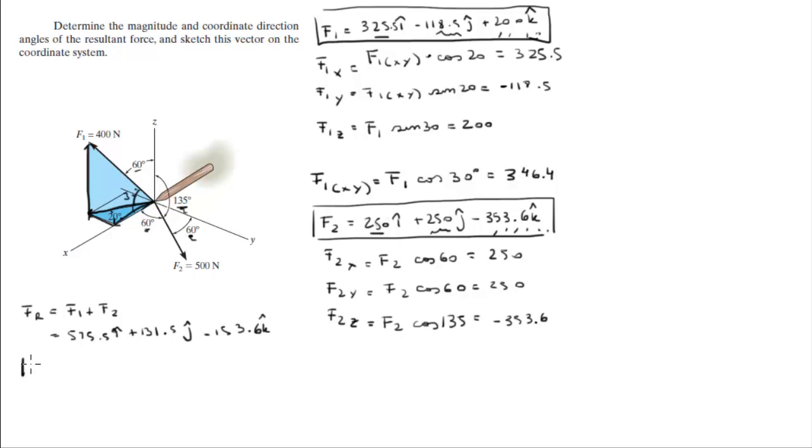The next step to find the angles, which is what they are asking us, is to find the magnitude. Magnitude can be found by doing the X, Y, and Z components squared, and square root it, and the value is 610. This is the magnitude of FR.